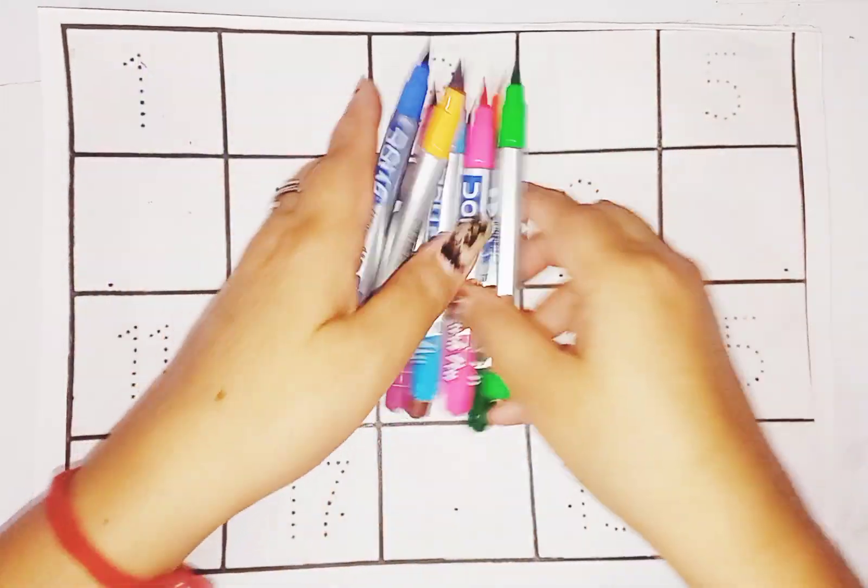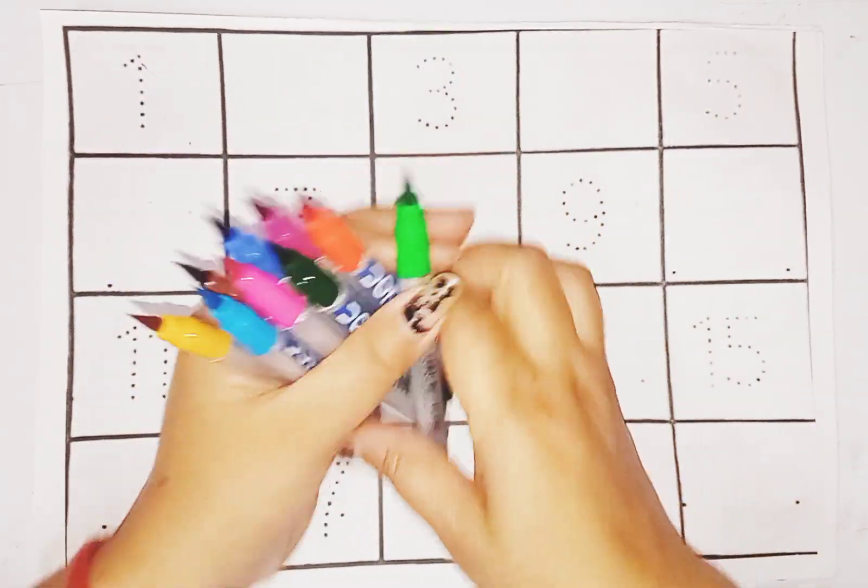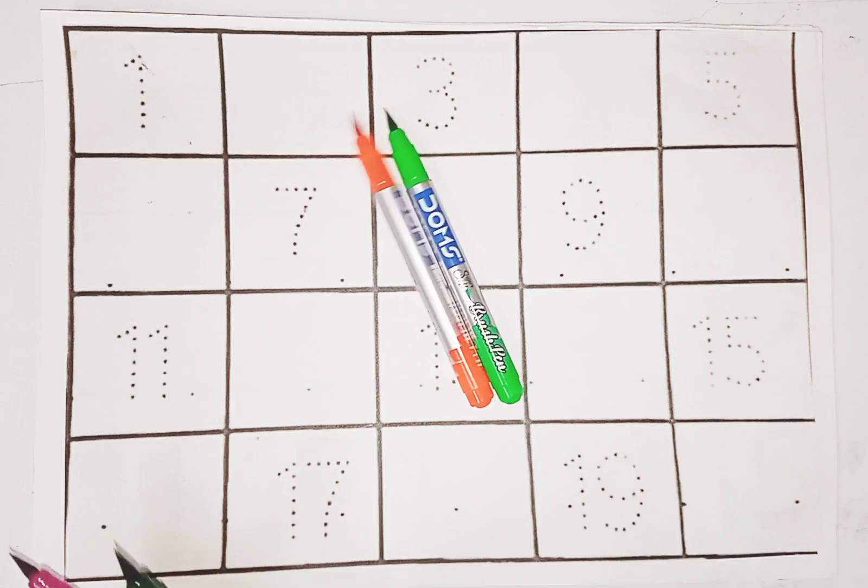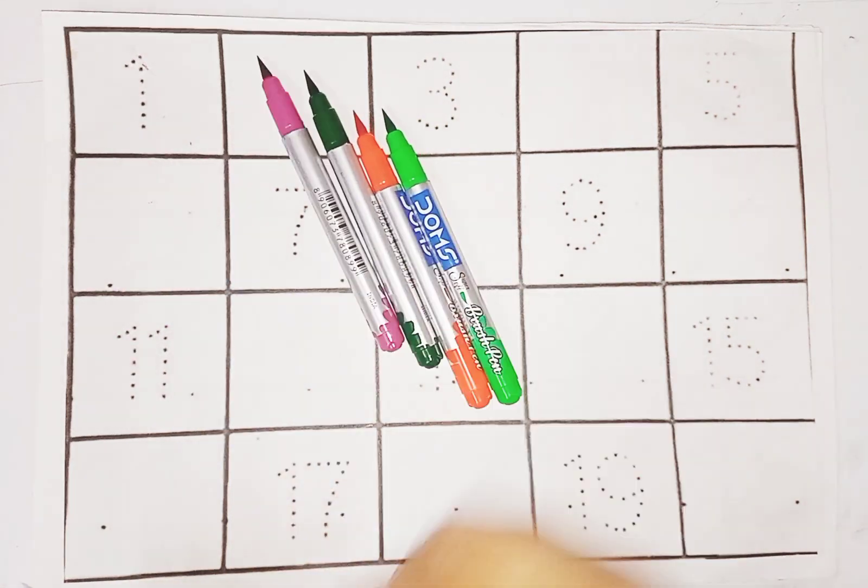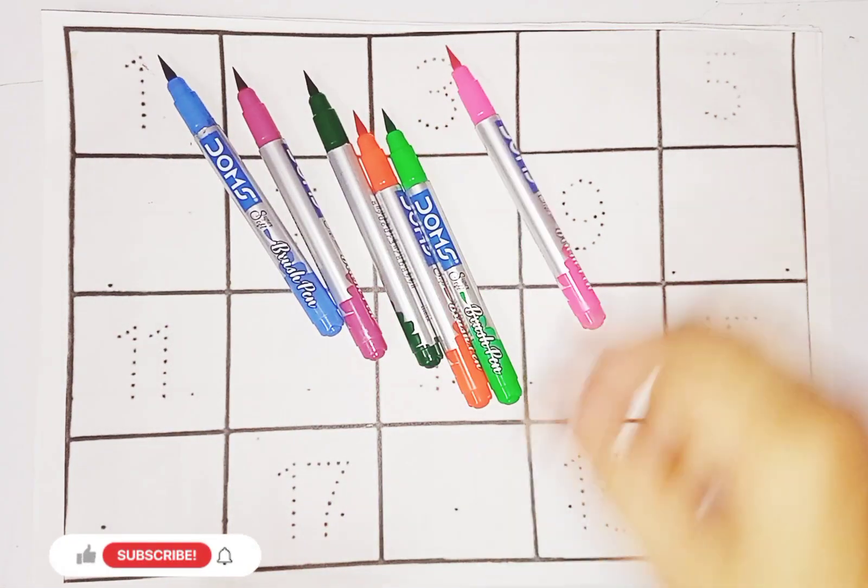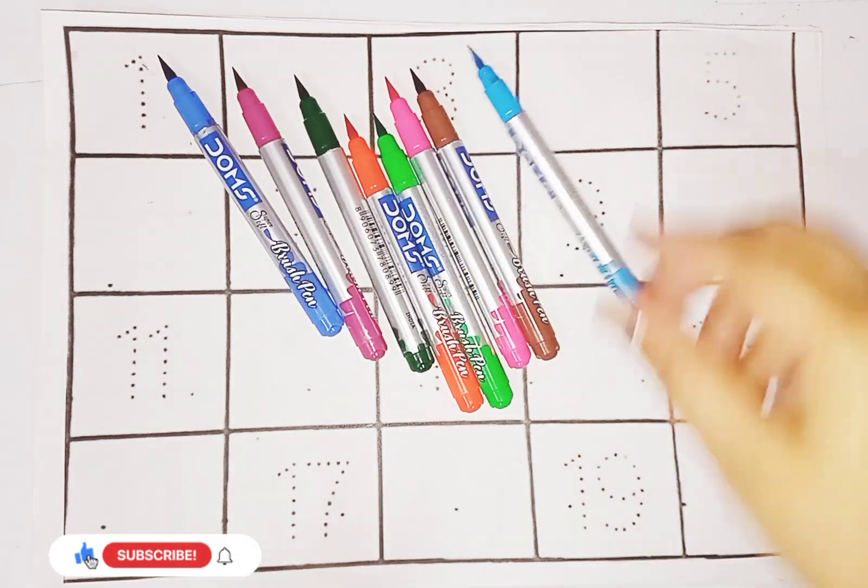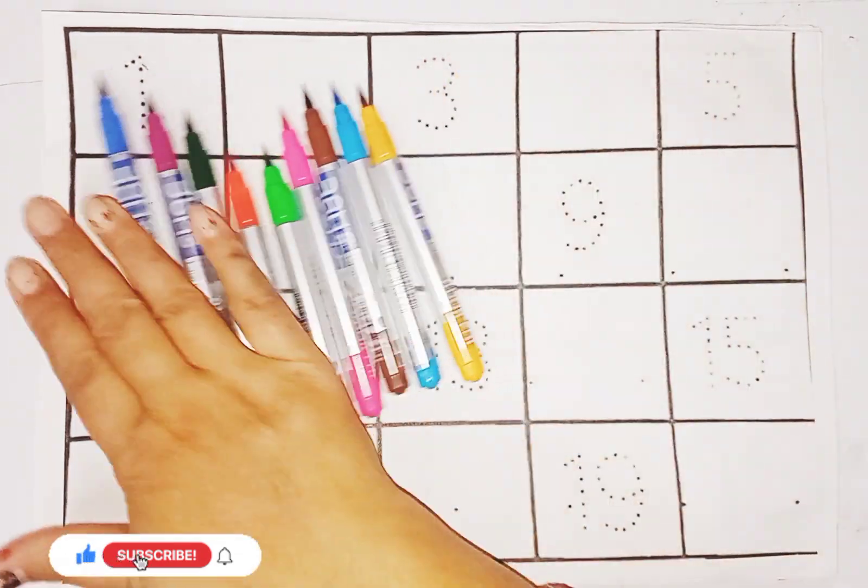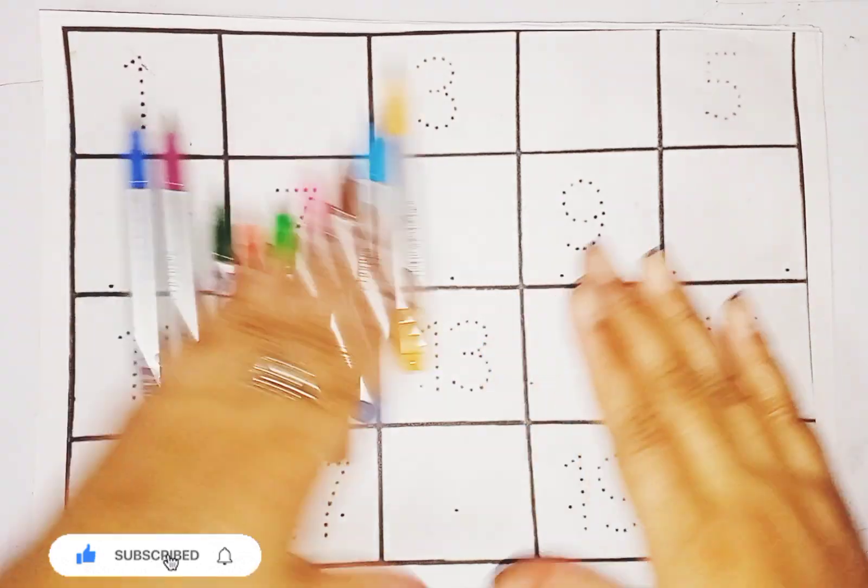These are colors. Green color, orange color, dark green color, purple color, blue color, pink color, brown color, sky blue color, yellow color. These are colors.